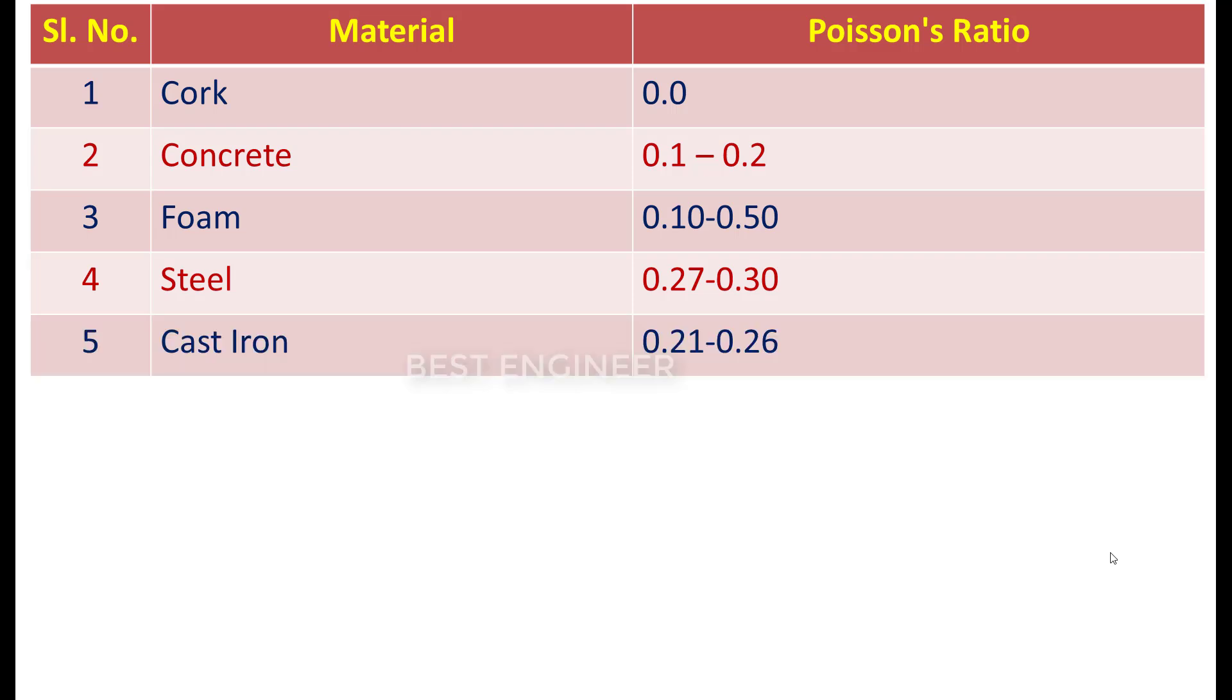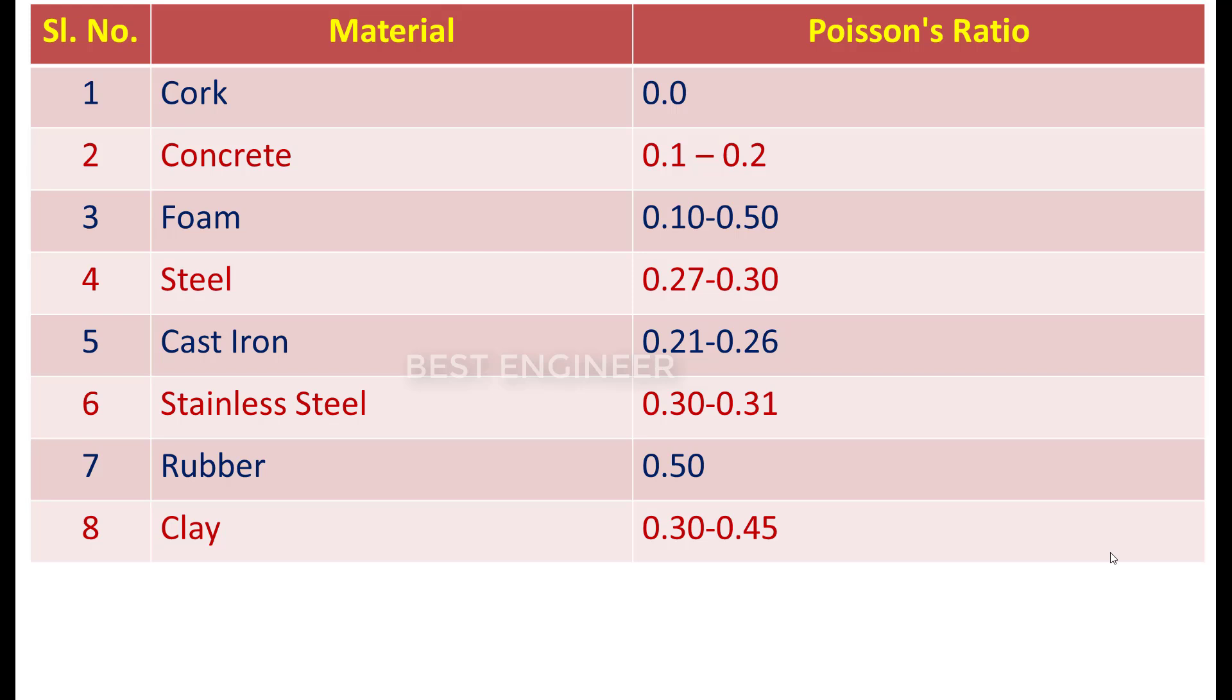For cast iron, 0.21 to 0.26. For stainless steel, 0.30 to 0.31. For rubber, 0.5. For clay, 0.30 to 0.45. For gold, 0.42 to 0.44.